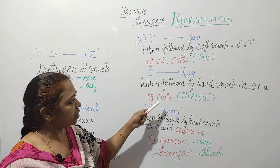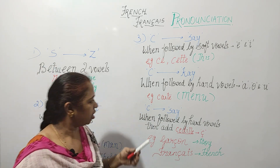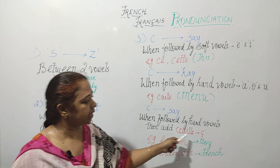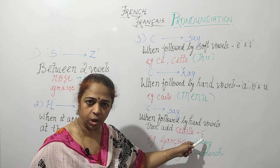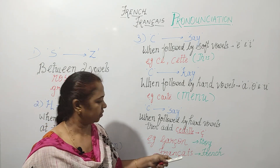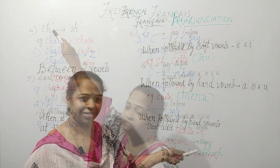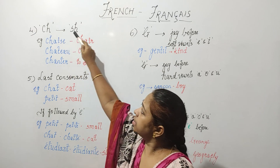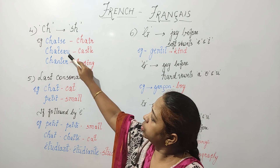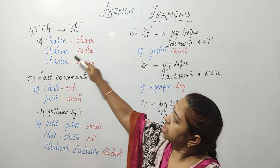If we want C to be pronounced as S when it is followed by hard vowels, we add a cedilla — a small hook below the C. For example, 'garçon' and 'français.' Garçon means boy, and français means French.